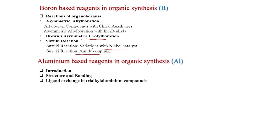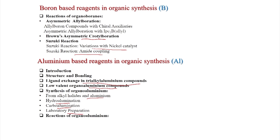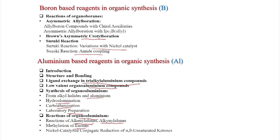Then we will discuss aluminum based reagents in organic synthesis: introduction, structure and bonding, ligand exchange in trialkyl aluminum compounds, low-valent organoaluminum compounds with aluminum-aluminum bonds, synthesis from alkyl halides and aluminum, hydroalumination, carboalumination, laboratory preparation from aluminum chloride, reactions of organoaluminum, methylation of enones, conjugate addition, conjugate reduction, and nickel catalysis with alpha-beta unsaturated ketones.